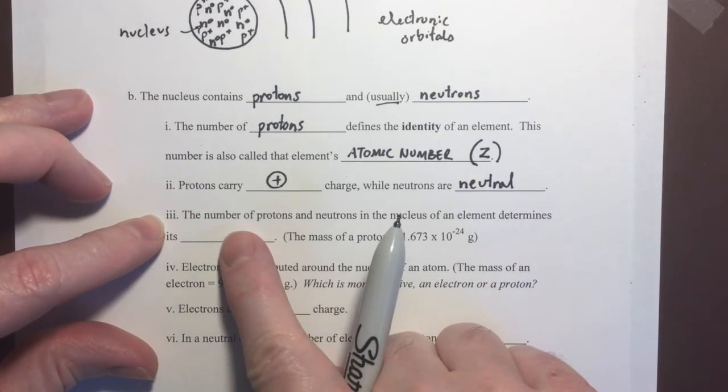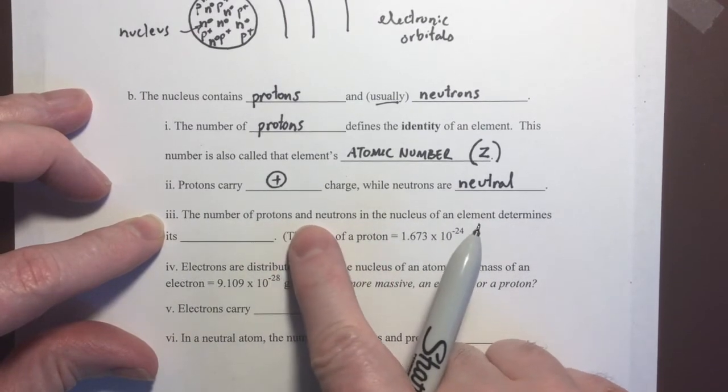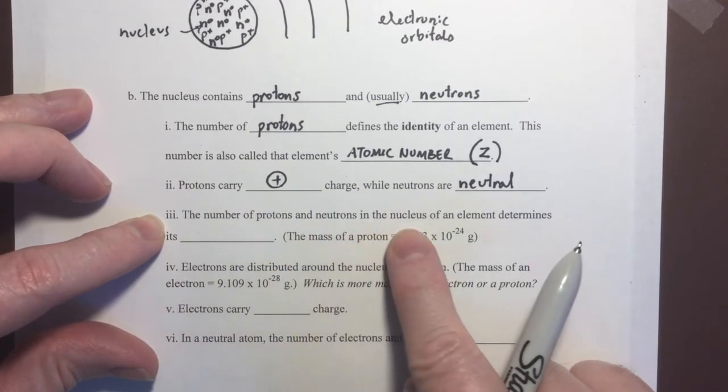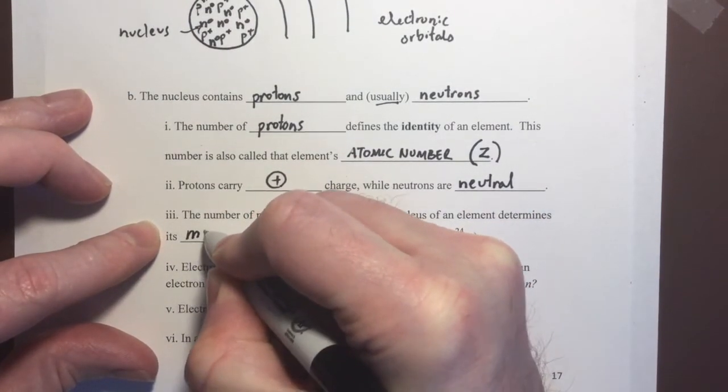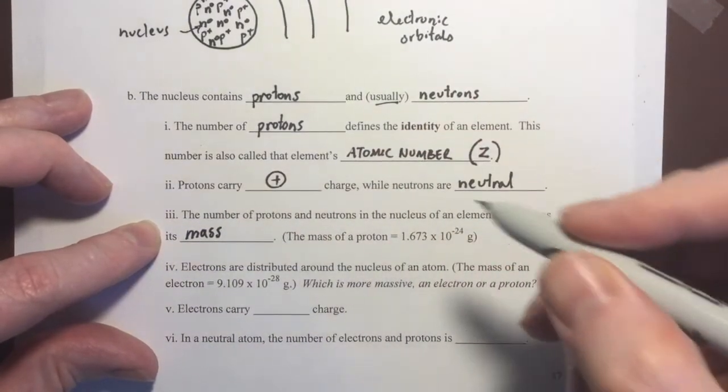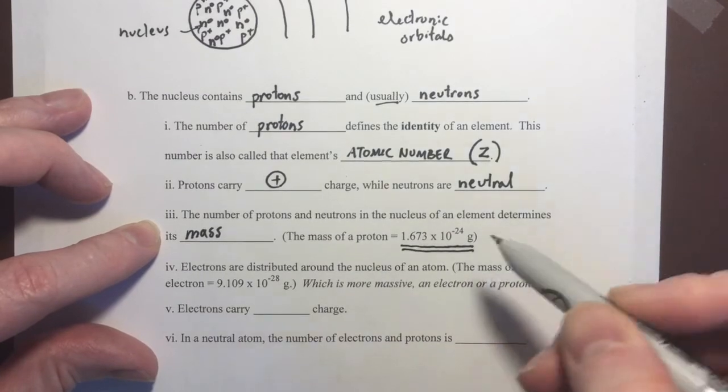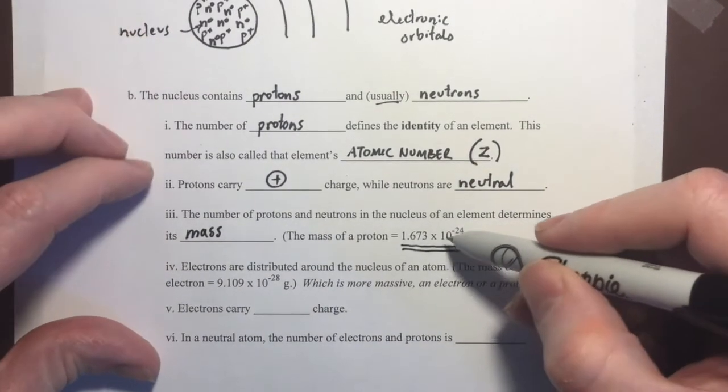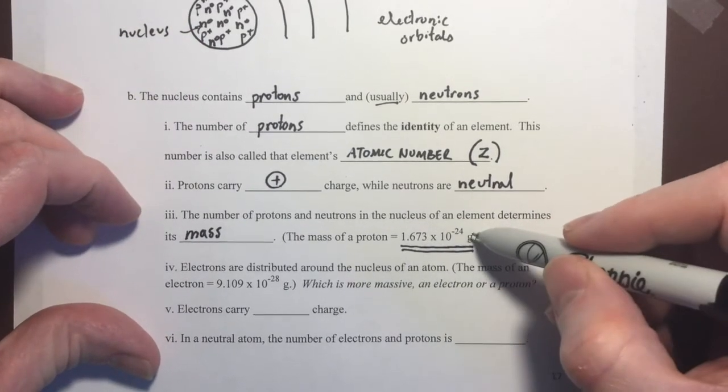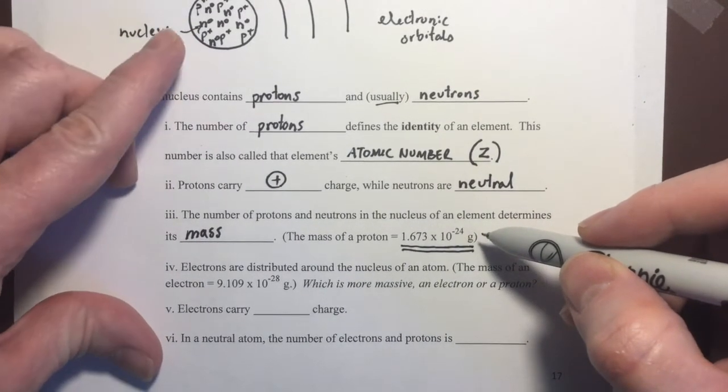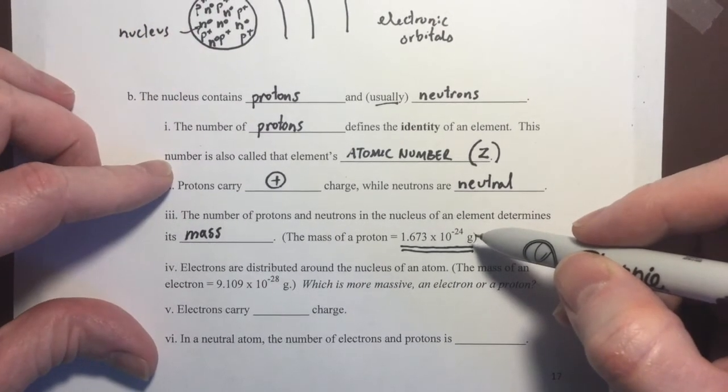Okay, next, we have the number of protons and neutrons. That is, the number of protons plus neutrons in the nucleus of an element determines its mass. And you can see that the mass of the protons, it's very small, but if you have six of those, you can have six times that mass in protons. Mass of a neutron is slightly larger than that, and so you'll have some mass in the nucleus of an atom.